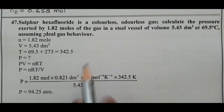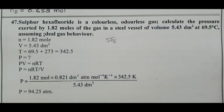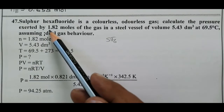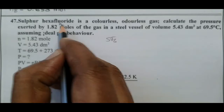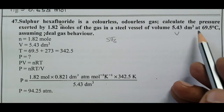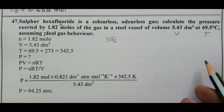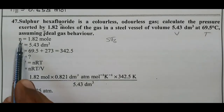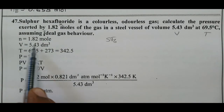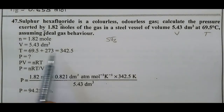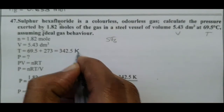Question number 47. Sulfur hexafluoride SF6 is a colorless, odorless gas. Calculate the pressure exerted by 1.82 moles of gas in a steel vessel of volume 5.43 decimeter cube at 69.5 degree Celsius, assuming ideal gas behavior. T = 69.5 + 273 = 342.5 Kelvin.